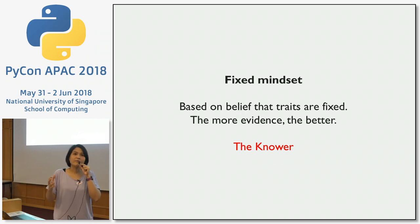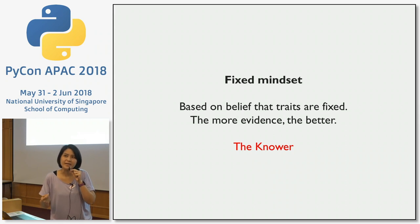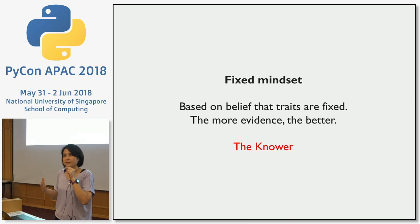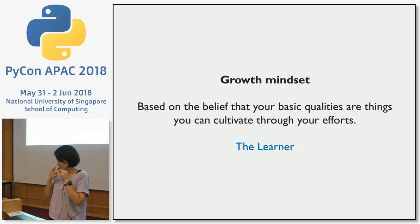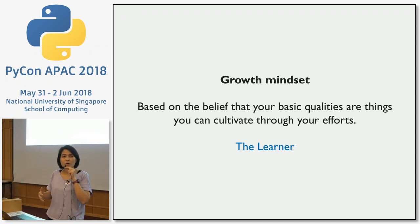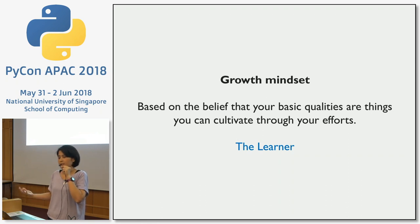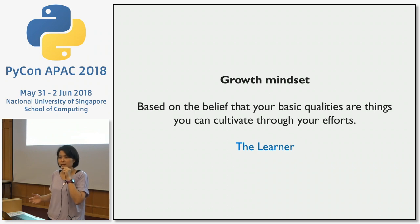From that fixed mindset, if I can give more evidence of being more intelligent, the better it is for self-confidence. We call this the 'knower.' Versus the growth mindset, which is based on the belief that qualities are ever expandable with more practice, development, and effort. With this mindset, the person is known as the 'learner.'